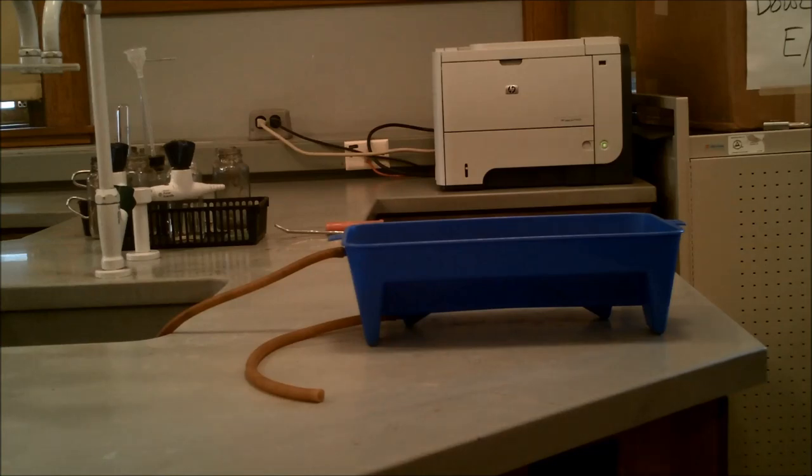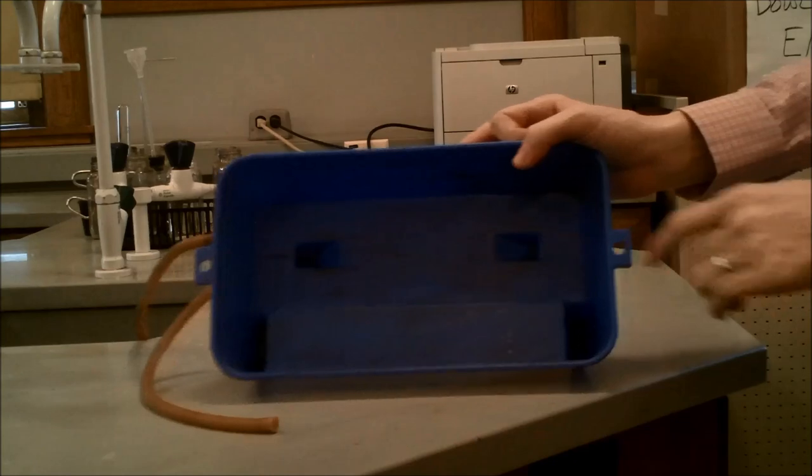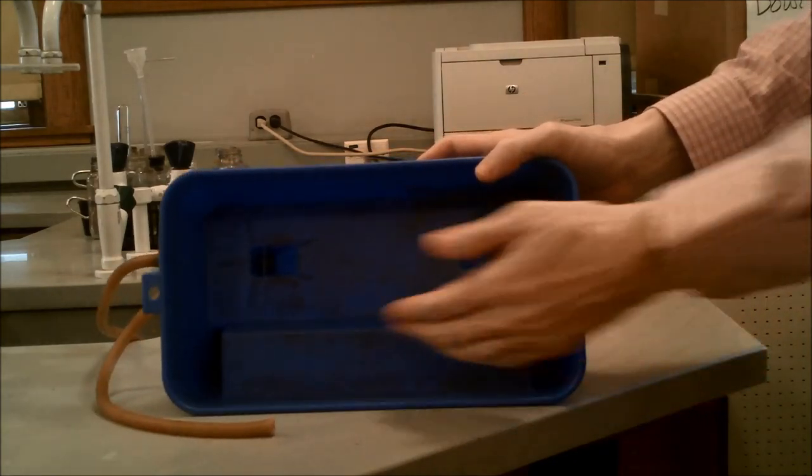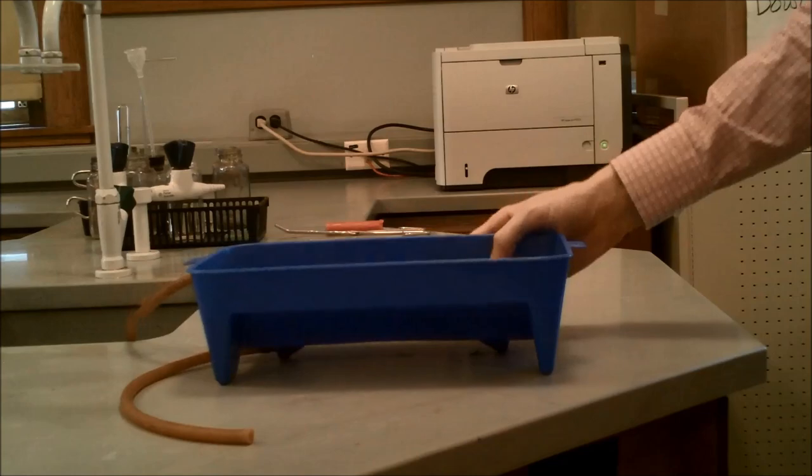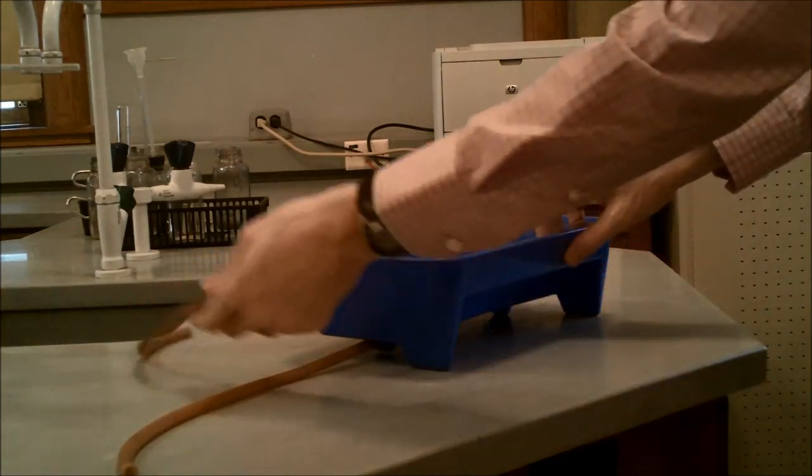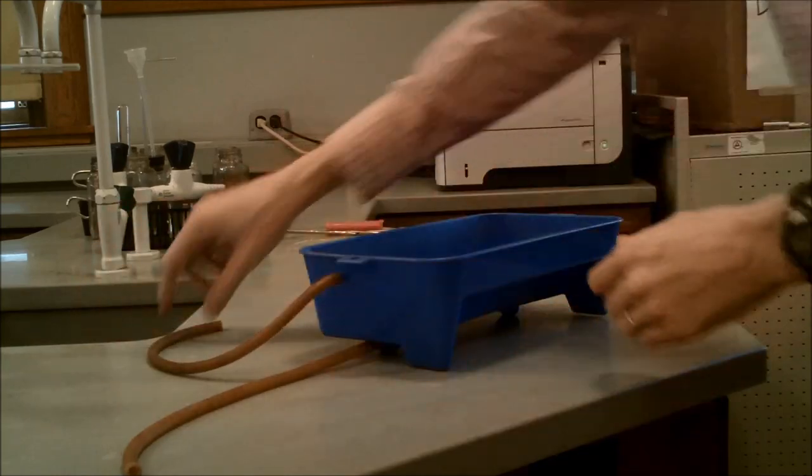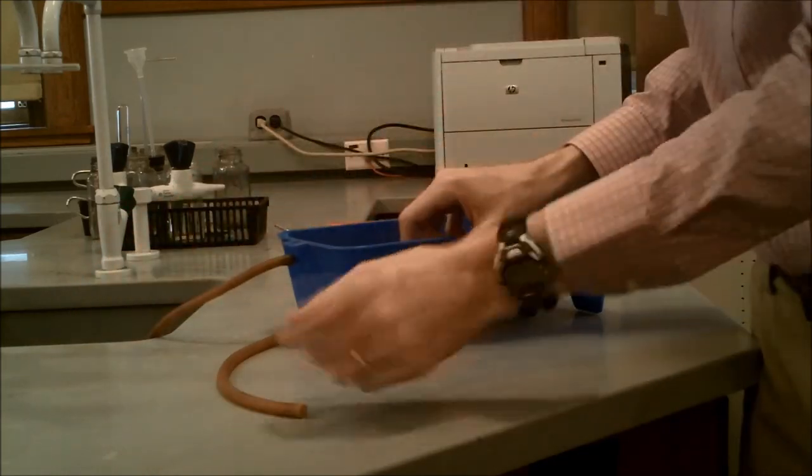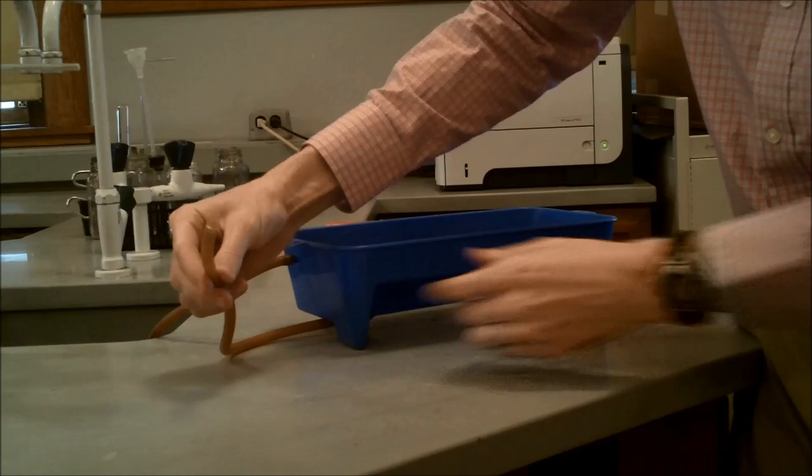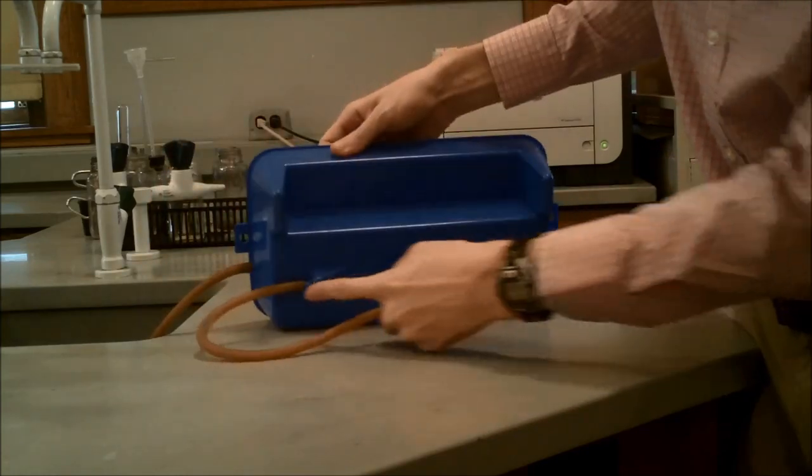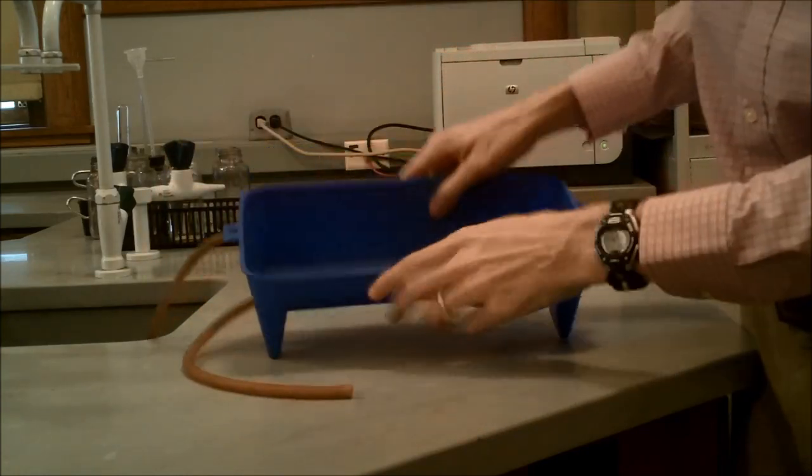The first thing is the gas collection trough, which is this blue thing. Inside of it you'll see that there is a shelf right there. Also there are two tubes attached. The one on the top is for draining of the water if you fill up too much, which will be in the sink. The one on the bottom will be connected to the reaction chamber, which also is connected to a hole at the bottom of the trough, which will allow the gases to bubble up.